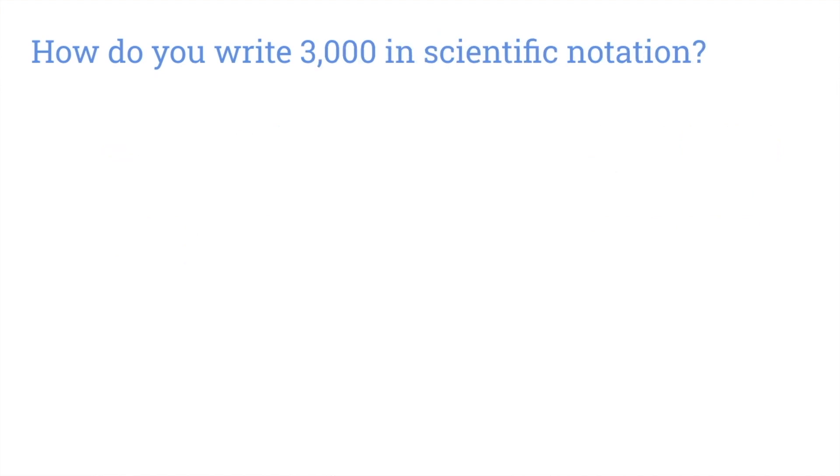Now, what if we're given a number in standard form and we want to write it in scientific notation? Let's try it using this number, 3,000. Remember, to write a number in scientific notation, it must have two factors. The first factor must be at least 1 and less than 10. The second factor must be a power of 10. The number 3,000 starts with 3. 3 is between 1 and 10, so that will be our first factor. The second factor must be 1,000 because 3 times 1,000 is 3,000. Now, we can write 1,000 as a power of 10. 1,000 has three zeros, so that is the same as 10 to the third power. We did it. We've written 3,000 in scientific notation as 3 times 10 to the third power.